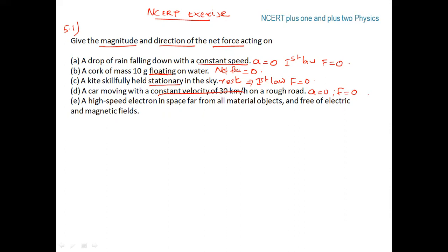Next: a high-speed electron in space, far from all material objects and free of electric and magnetic fields. There are no agencies to produce gravitational or electromagnetic force, therefore net force is zero.